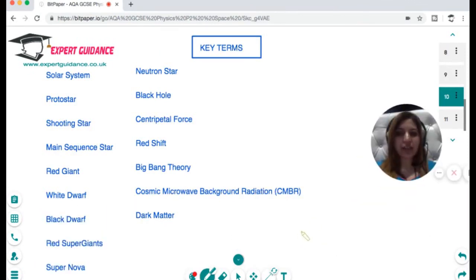Hopefully now you have understood the different components of this unit. You should now be able to define: solar system, protostar, shooting star, main sequence star, red giant, white dwarf, black dwarf, red supergiant, supernova, neutron star, black hole, centripetal force, redshift, Big Bang theory, cosmic microwave background radiation, dark matter.